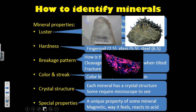The last property is special properties. Understand they're called special because not every mineral has them. A mineral might have double refraction, meaning you can see through it and it doubles text underneath it. They might be magnetic. And some are fluorescent, which means that when put under UV light, atoms in the mineral glow and give off really funky colors. Those are some examples of special properties, but again, not every mineral has a special property.